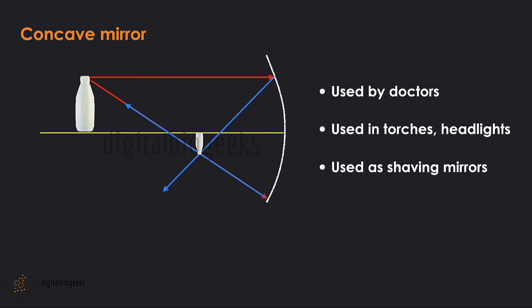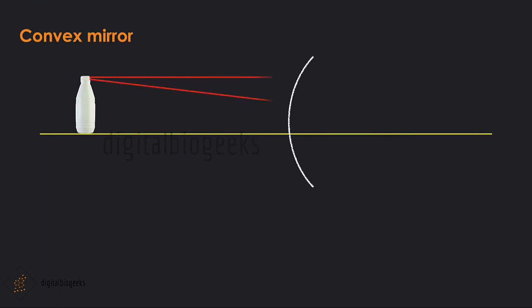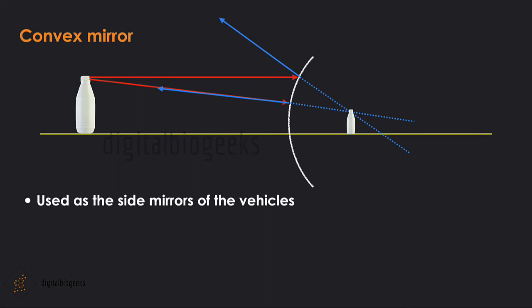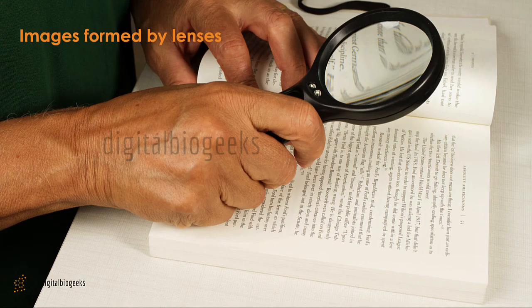Now let's see what is the case with a convex mirror. The reflected rays from the convex mirror will not meet at a point in front of the mirror; we will always get a virtual and erect image, and the image will not be obtained on a screen. The size of the image is always small compared to the object, regardless of the position of the object. The mirrors used on the sides of vehicles are convex mirrors. Convex mirrors can form images of objects spread over a larger area, helping drivers to see the traffic behind them.